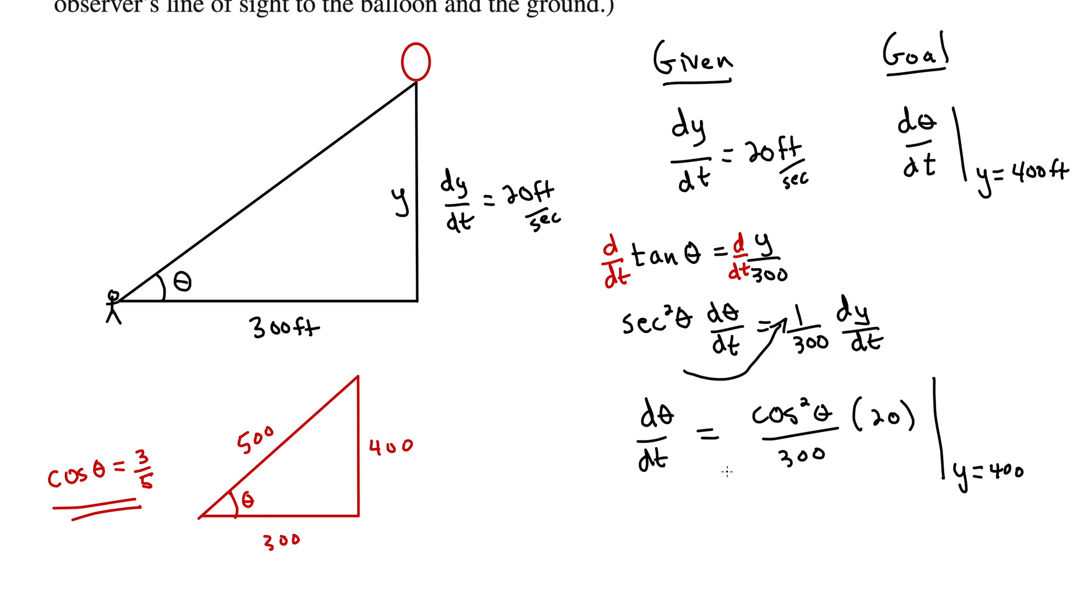Let's go ahead and plug that in. We'll write this as 1 over 300 times 3 fifths quantity squared times 20. Put that all into a calculator. You get 0.024.